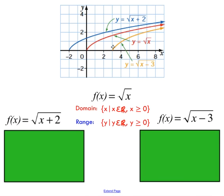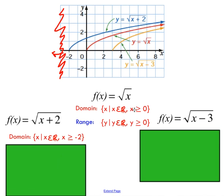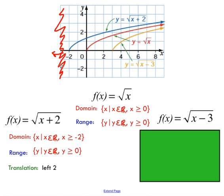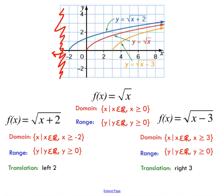Looking at the graphs: the red graph is the original square root base graph. When graphed, root of X plus two has been shifted to the left by two. Root of X minus three is shifted to the right by three. For the domain and range of the translated functions: when moving left by two, the X values allowed change — I can now substitute negative numbers as long as they're greater than or equal to negative two. The range has not changed, since taking the square root never produces a negative value.